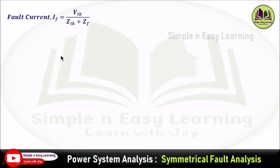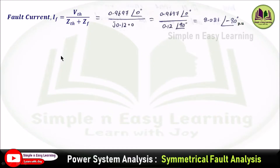The fault current expression is I_F = V_Thevenin divided by (Z_Thevenin + Z_F). V_Thevenin is known, Z_Thevenin was calculated as j0.12, and Z_F (fault impedance) is not specified in the problem, so it is considered as zero. Substituting these values, the fault current is 8.081 angle −90° per unit.